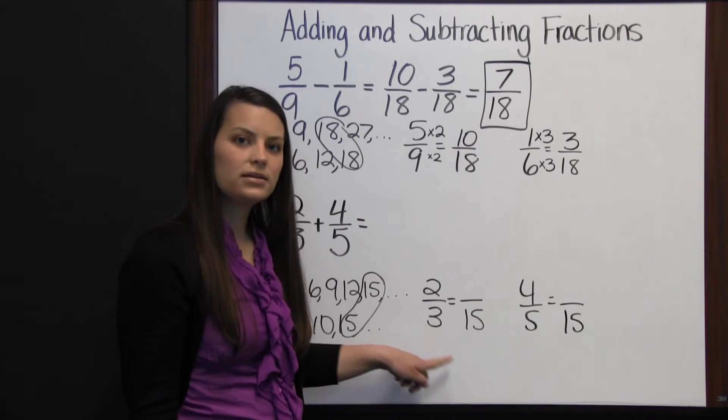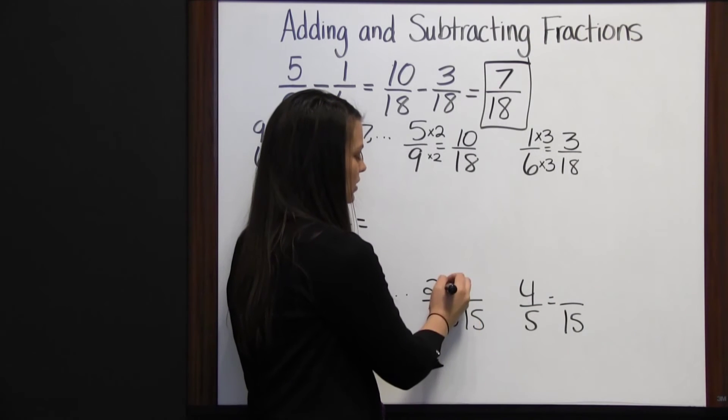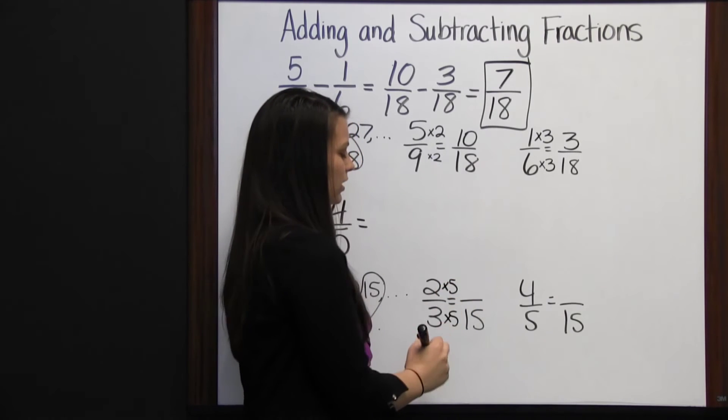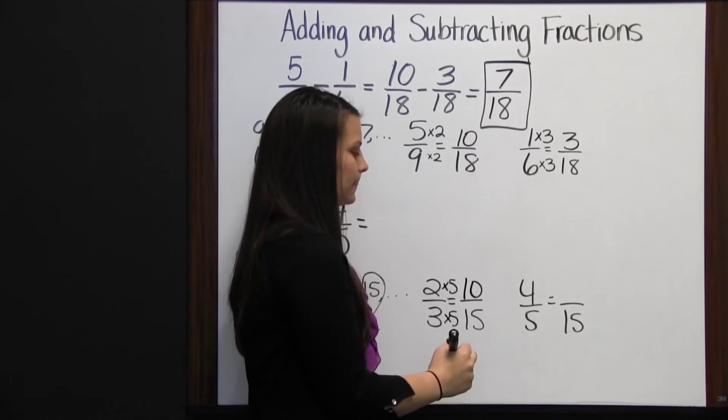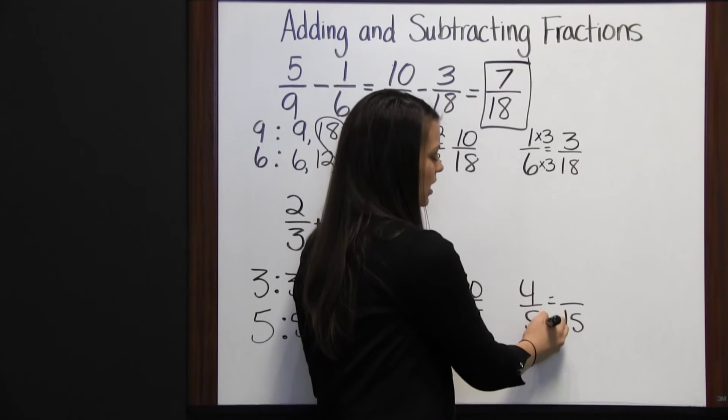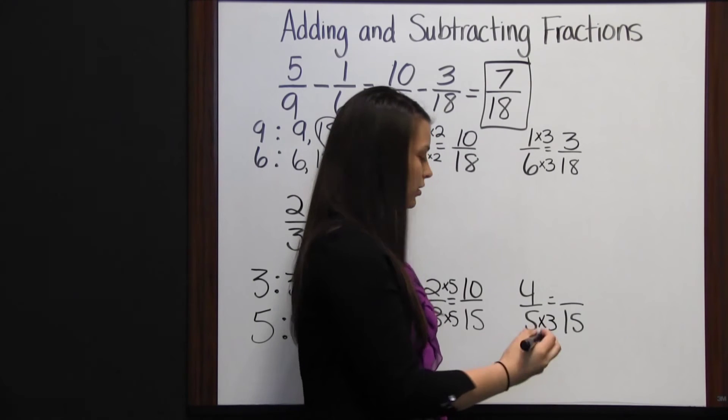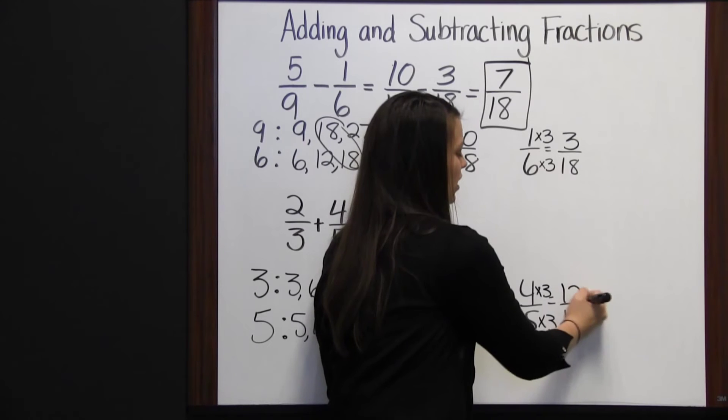So to get from three to fifteen, we have to multiply times five, so we need to do the same to our numerator. Two times five is ten. Five to fifteen, we have to multiply five times three, so we do the same to our numerator. Four times three is twelve.